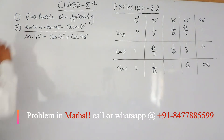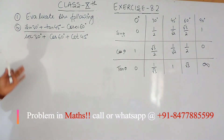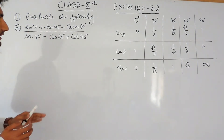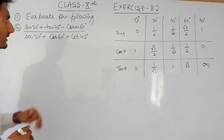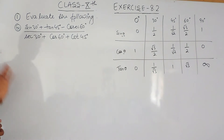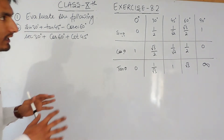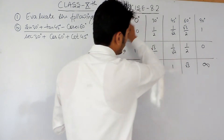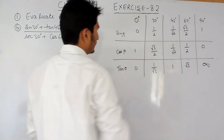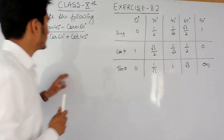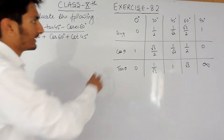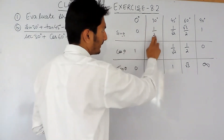First of all, you must know the value of sine 30 degrees, tan 45 degrees, cos 60, sec 30, cos 60, and cos 45. There is a table given to you, and from this table you can see that sine 30 will be 1 by 2.